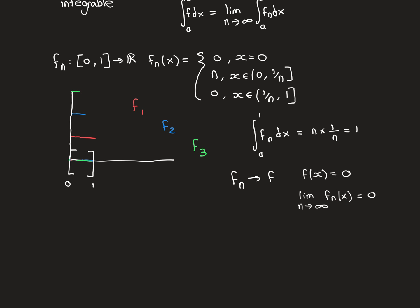So every single point's pointwise sequence eventually converges to zero, meaning every point is mapped onto zero by the limit function. To illustrate: take x = 1/10. Its pointwise sequence evaluates all fn at 1/10. For f1 through f10, the point 1/10 lies within [0, 1/n], so it gets mapped onto n: giving values 1, 2, 3, ..., 10.